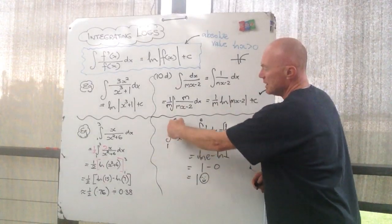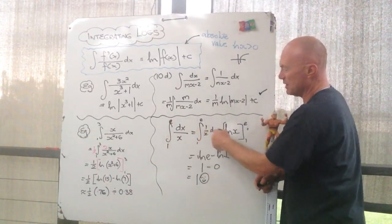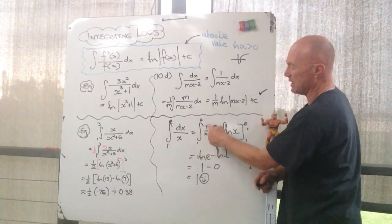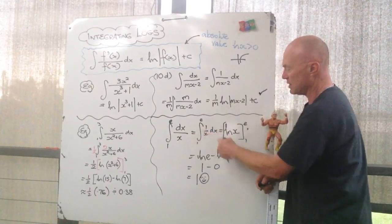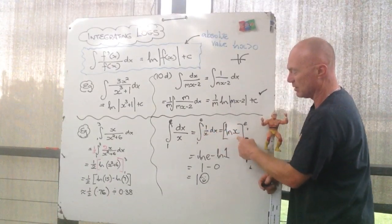Now, one to e dx on x. Move the dx back out to there. So it's one over x. That's the classic form. Function dash x on function x. So that's log of function x, log of x.